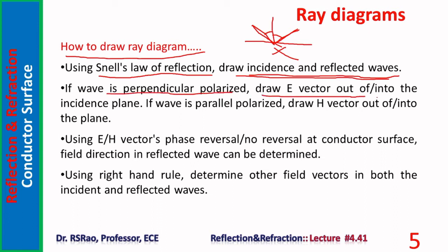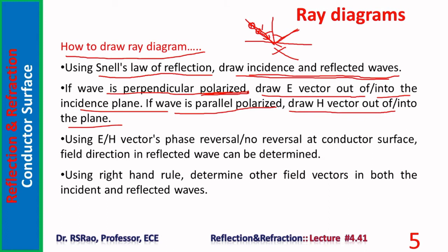For perpendicular polarization, E out of the board is indicated by a dot in a circle (arrow tip toward you); E into the board is indicated by the tail of the arrow. For parallel polarization, the H vector is drawn out of or into the plane of incidence. Once the direction of propagation and the electric vector are known, the other field component can be found using the right-hand rule: E, H, and direction of propagation form a right-handed vector system.